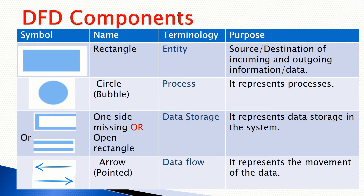The DFT components — there are some predefined and special tools and components used to determine and construct any DFT diagram. The first one is the rectangle, which represents the entity that could be source or destination. The source is the incoming data source and the destination is the outgoing data source — where data comes from and where data is going. The second component is the circle, which represents the process in the system, and it is represented by the bubble or circle.